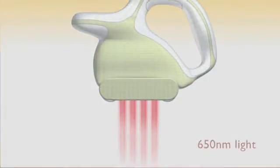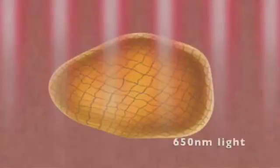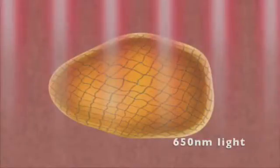650 nanometer light directly increases the permeability of the fat cell membrane. Each membrane is like a fine mesh strainer where ion and natural chemical exchanges take place.